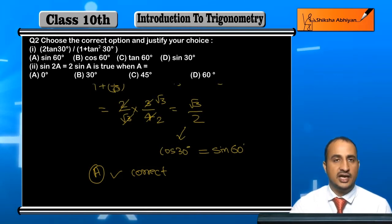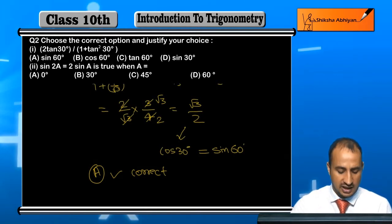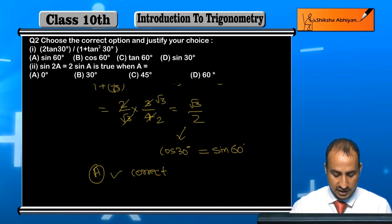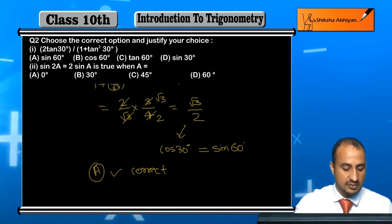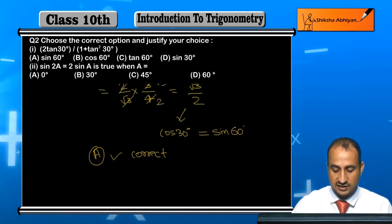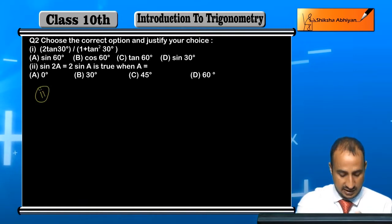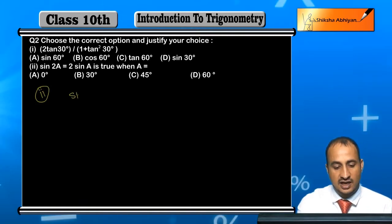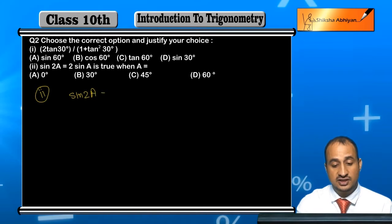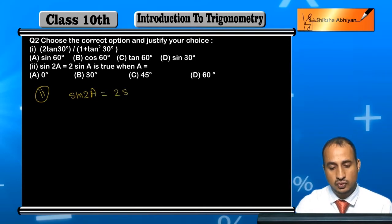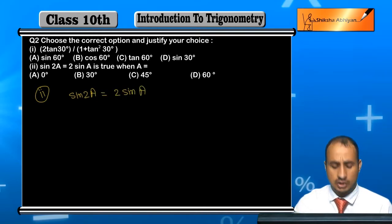cos30° is not among the options. Now we move to the next part — in the second part, we are asked: sin2A = 2sinA. This statement is given to us.